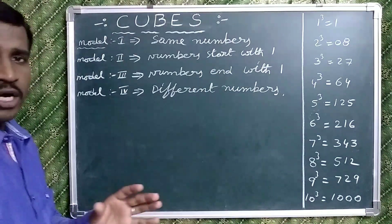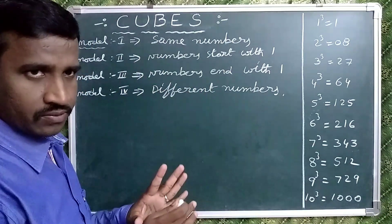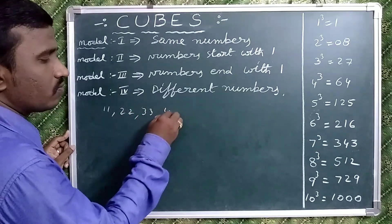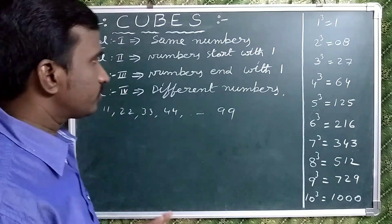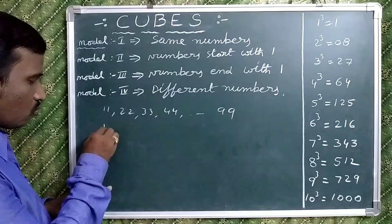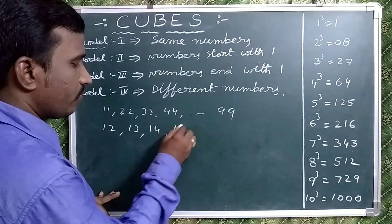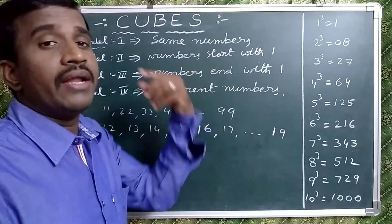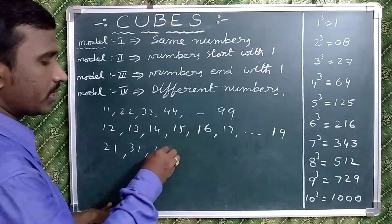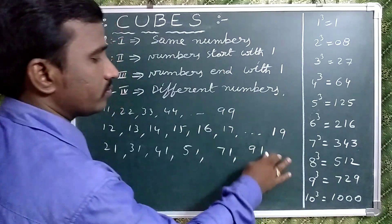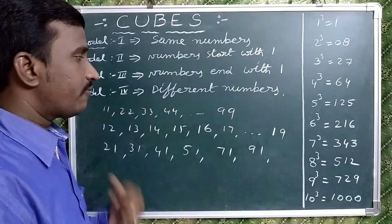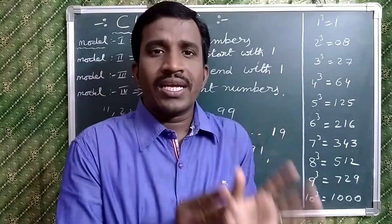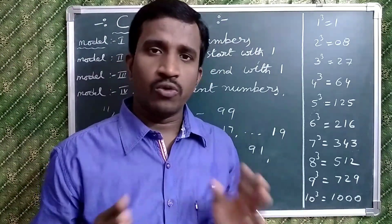Let's go to the concept. The cubes of two-digit numbers are divided into mainly four categories. In the first case, same-digit numbers means 11, 22, 33, 44, so on up to 99. In the second one, numbers starting with 1 means 12, 13, 14, 15, 16, 17, so on up to 19. Third one, numbers ending with 1 means 21, 31, 41, 51, 71, 91, and so on. The fourth model is for different numbers, means 25, 37, 48, like this. In these 4 different categories, dividing the two-digit numbers will be easy.